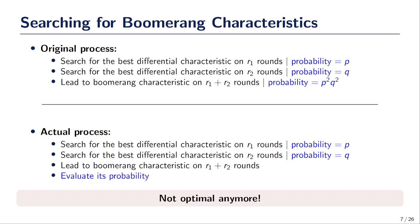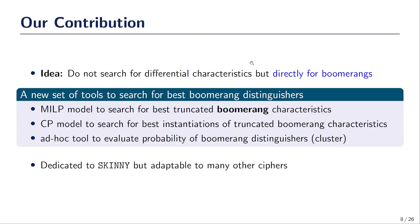That's why we started this work. Our main idea was to search for Boomerangs directly without searching for differential characteristics. So we propose a new three-step approach to search for the best Boomerang distinguishers. First, we propose a MILP model to search for truncated Boomerang characteristics.